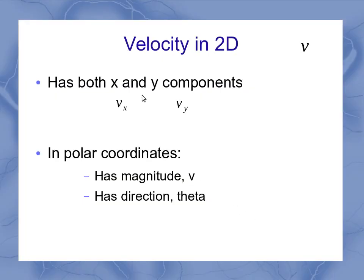In two dimensions, those x and y velocities become components of a single velocity, and they become vx and vy.